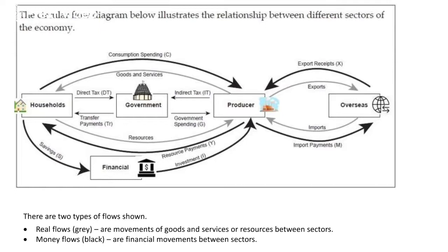The line between the government and the producers: government will spend money — you can see G there — and that's helping businesses grow. That also includes things like education, new roads, and healthcare upgrades. The line from the producer to the government, where you can see indirect tax, is either GST or corporate tax. Producers pay GST — goods and services tax — on goods and services they provide every month, and then they also have to pay corporate tax annually.